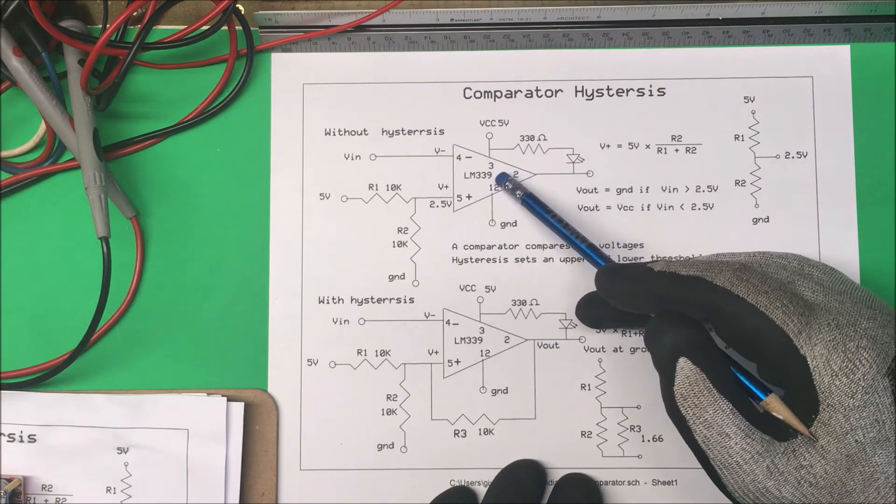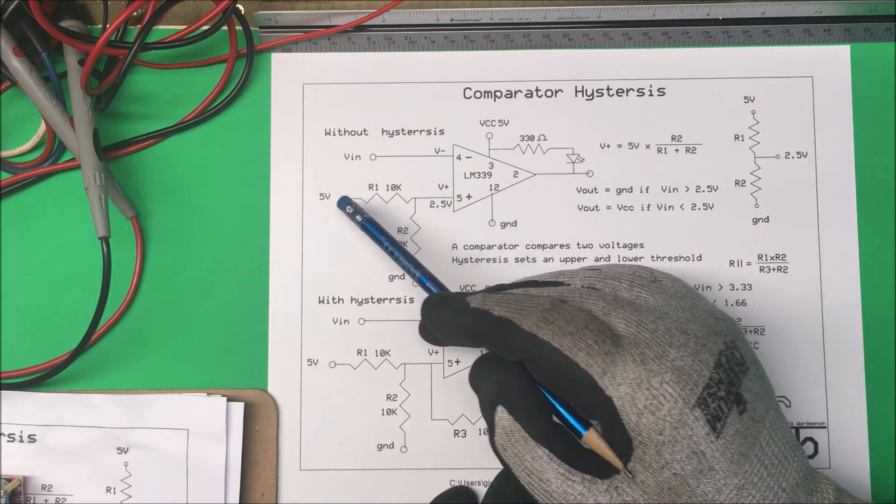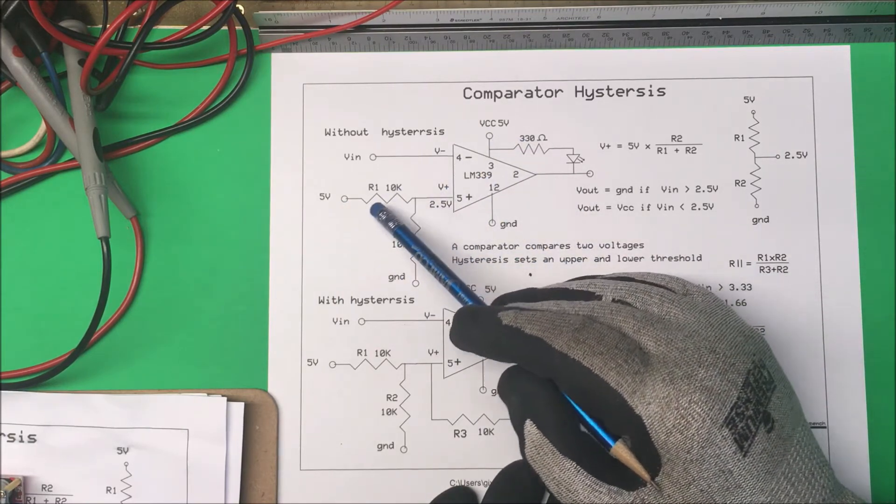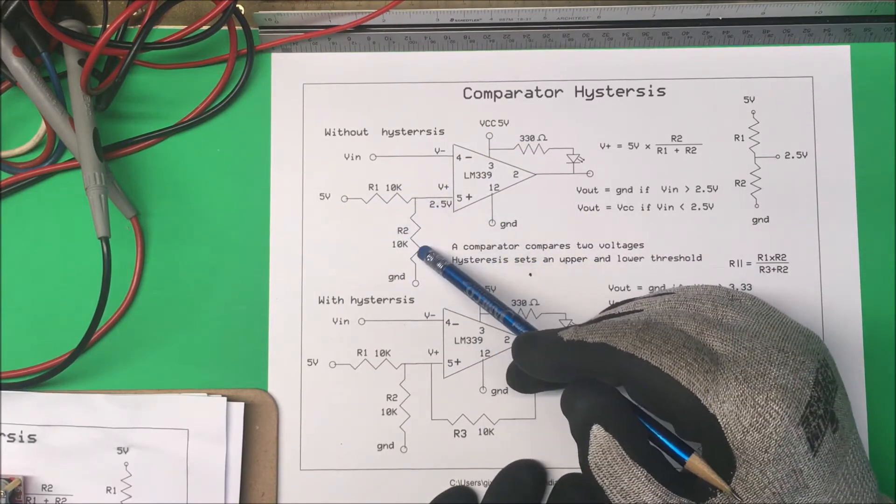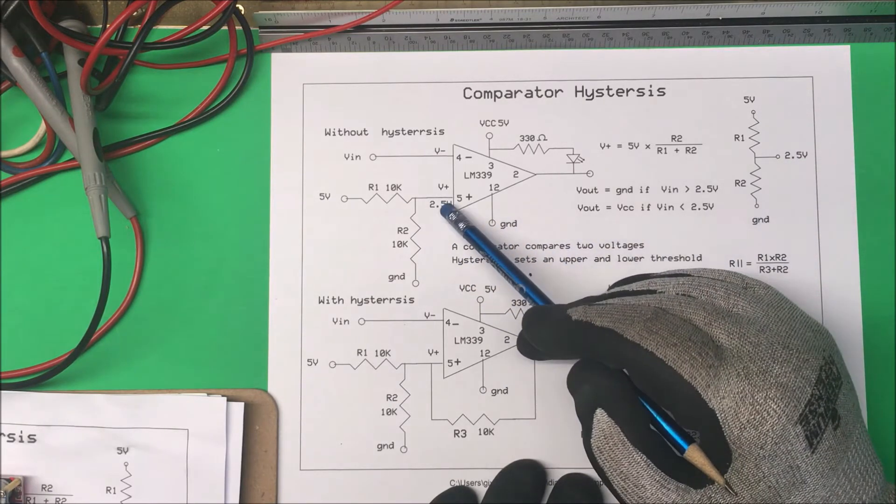In this case, no hysteresis. We're using an LM339 and this pin here is going to be our reference voltage. I put in 5 volts here, 5 volts on the rail too, and so this is a voltage divider, 10k, 10k. That means I'm going to put 2.5 volts out here on our voltage divider.